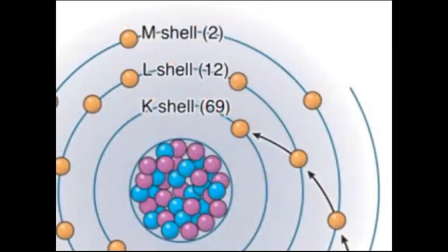It is important to remember that each electron orbital has a distinct binding energy level. Note that the L-shell binding energy is only 12 keV compared to the K-shell's binding energy of 69 keV.